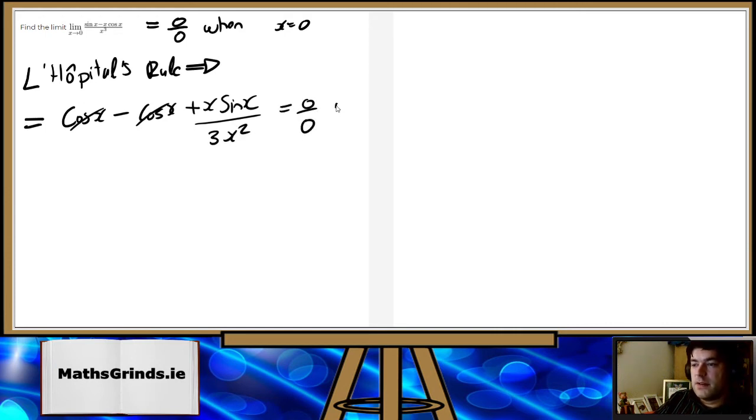This will equal 0 over 0 when x is 0. So we can use it again, the rule.